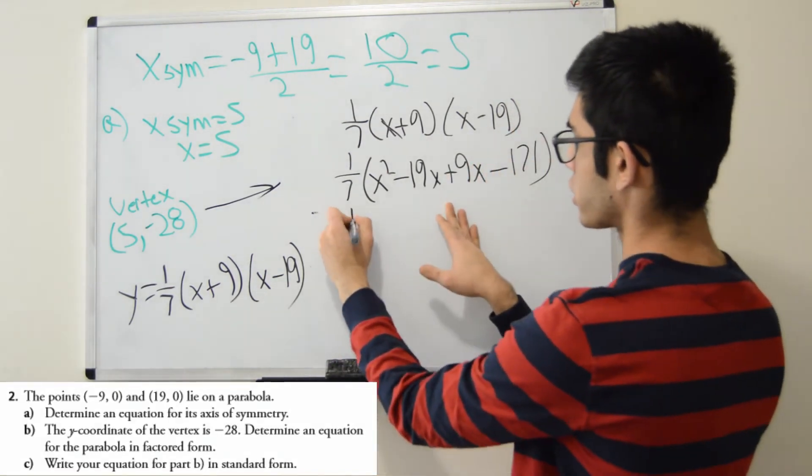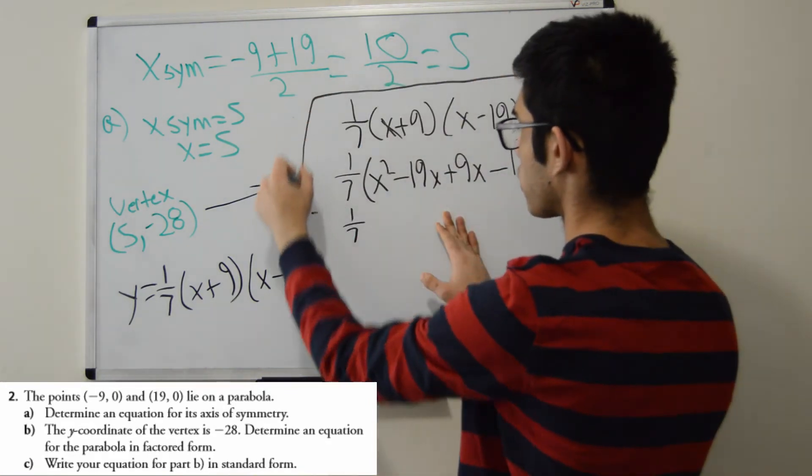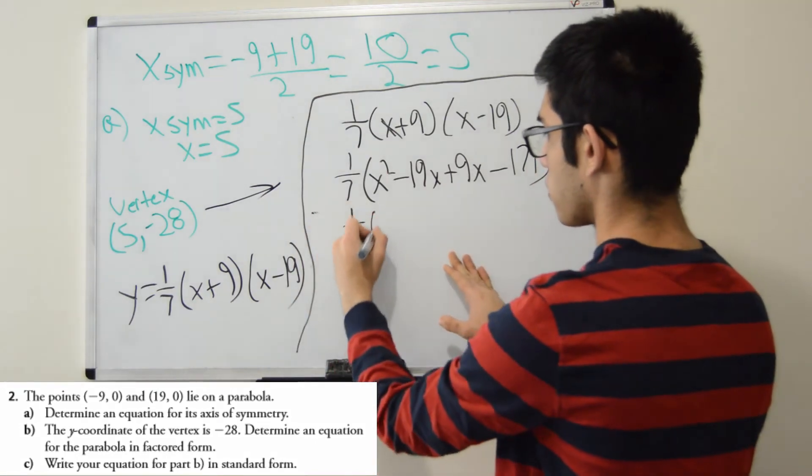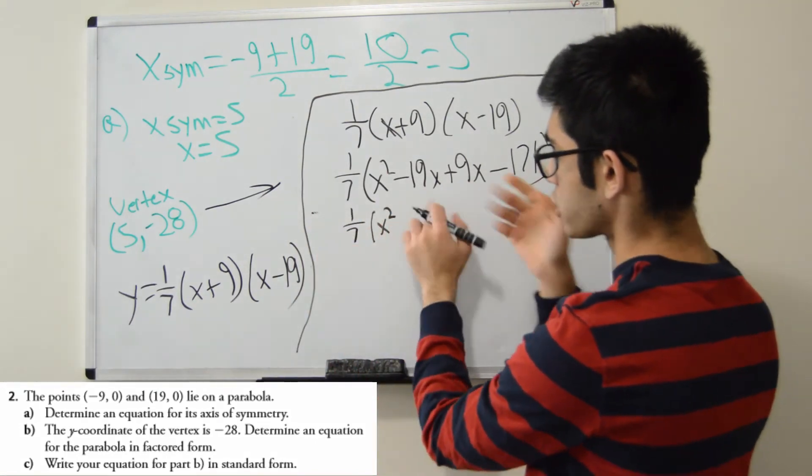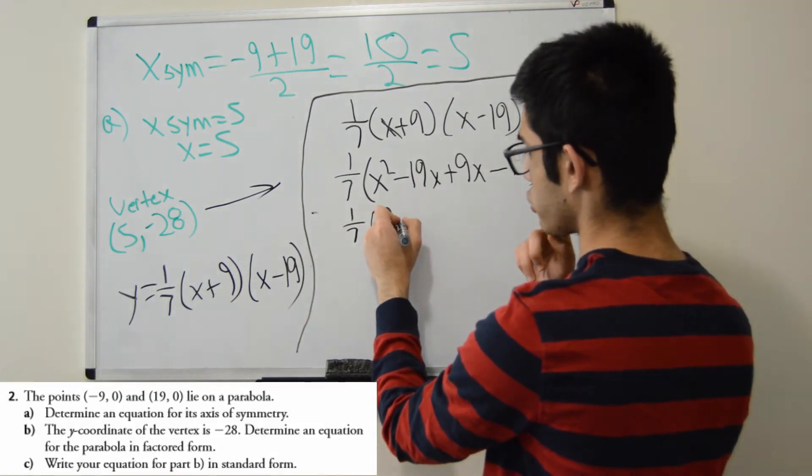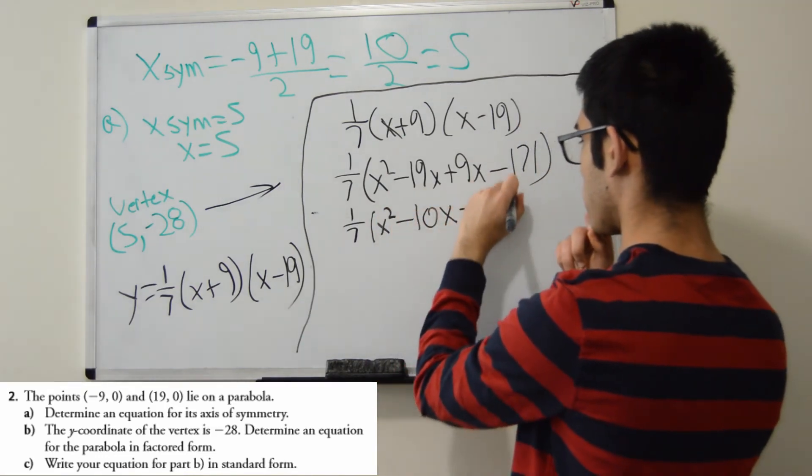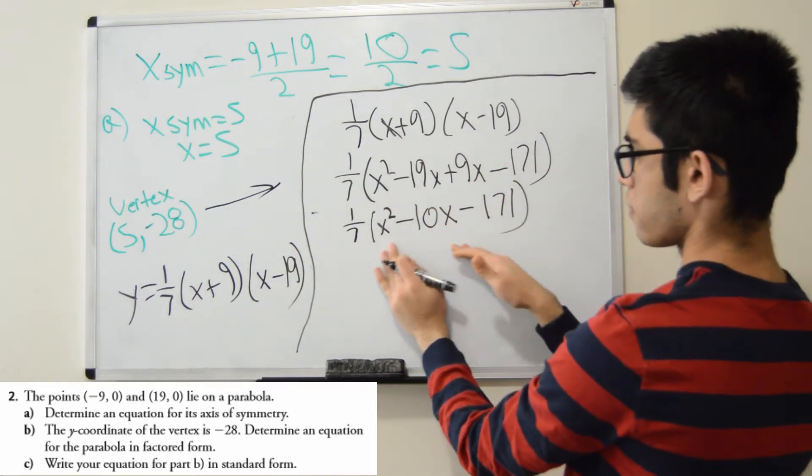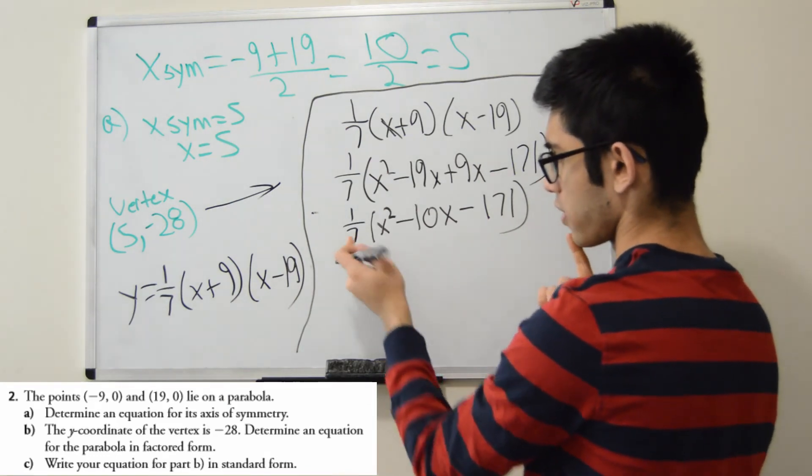So now we have to collect our like terms inside of here. So x squared. So -19x and 9x, these are common like terms, so I can collect those. -19x + 9x, so a simple integer. So that's -10x - 171. There we go.